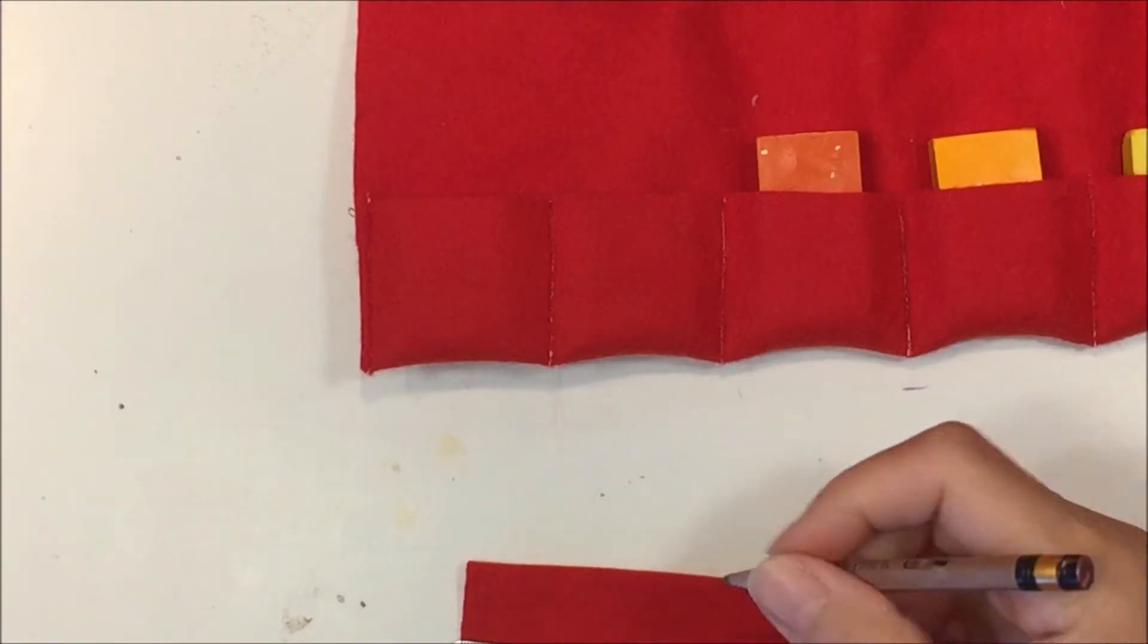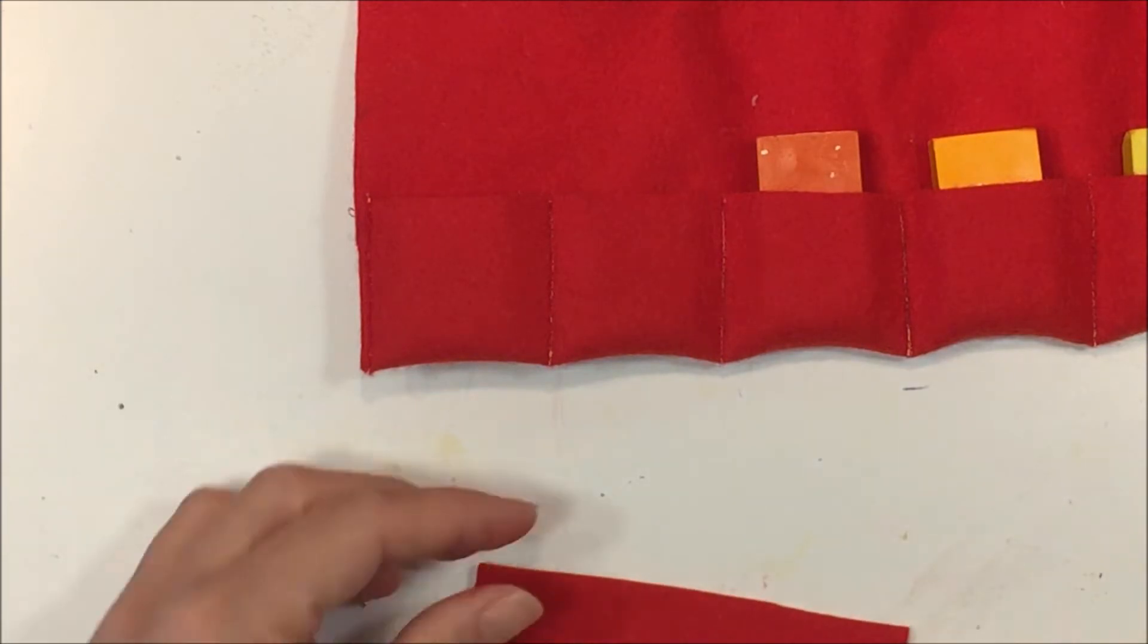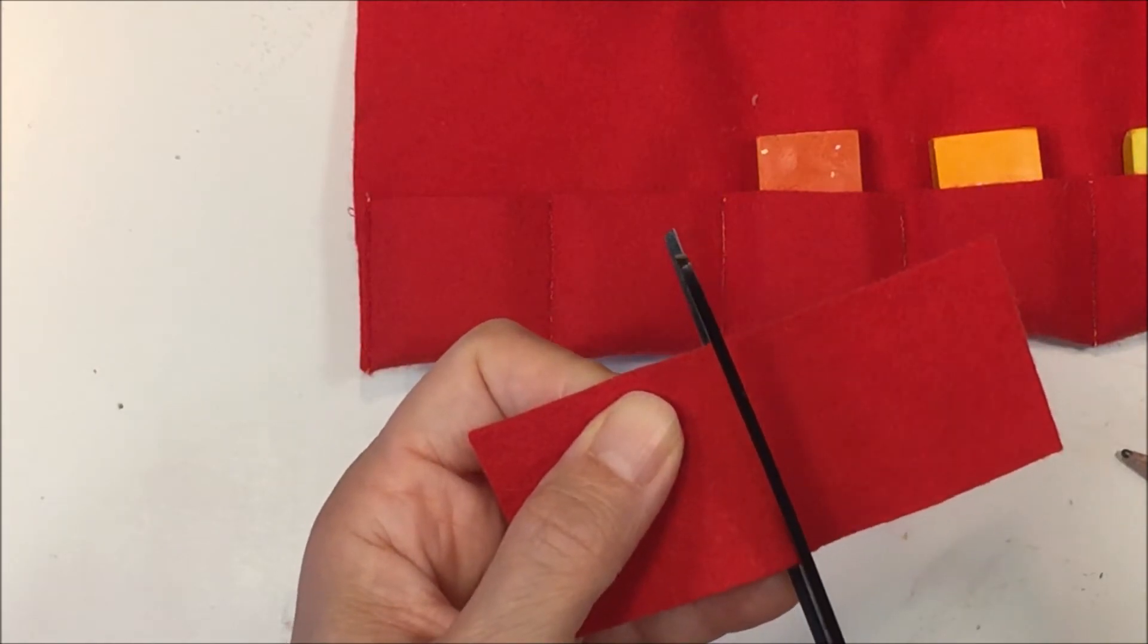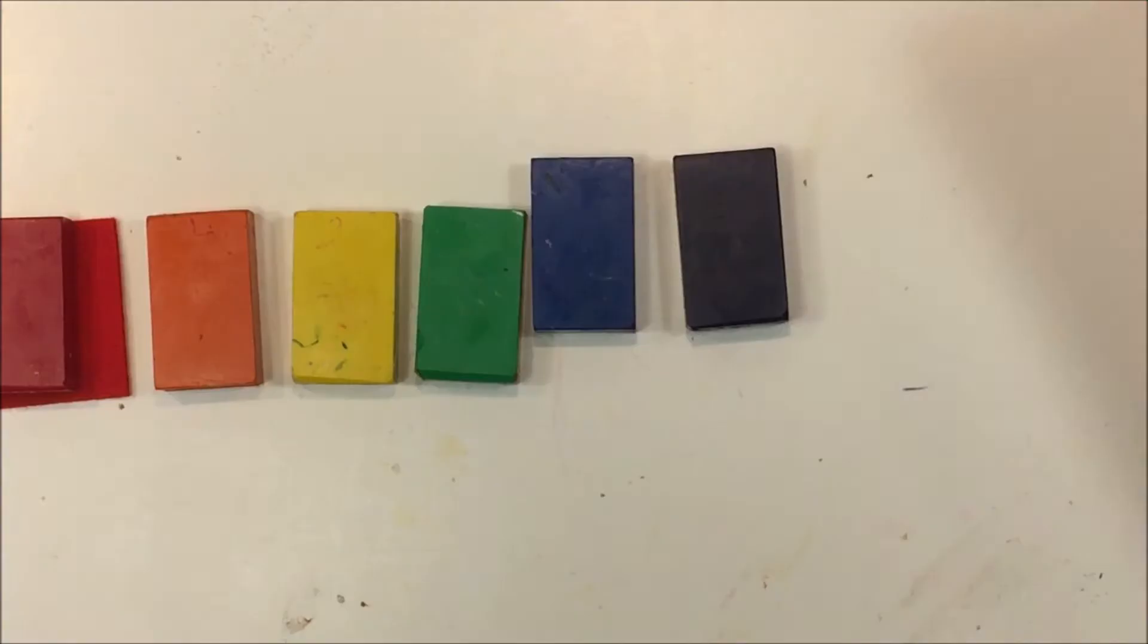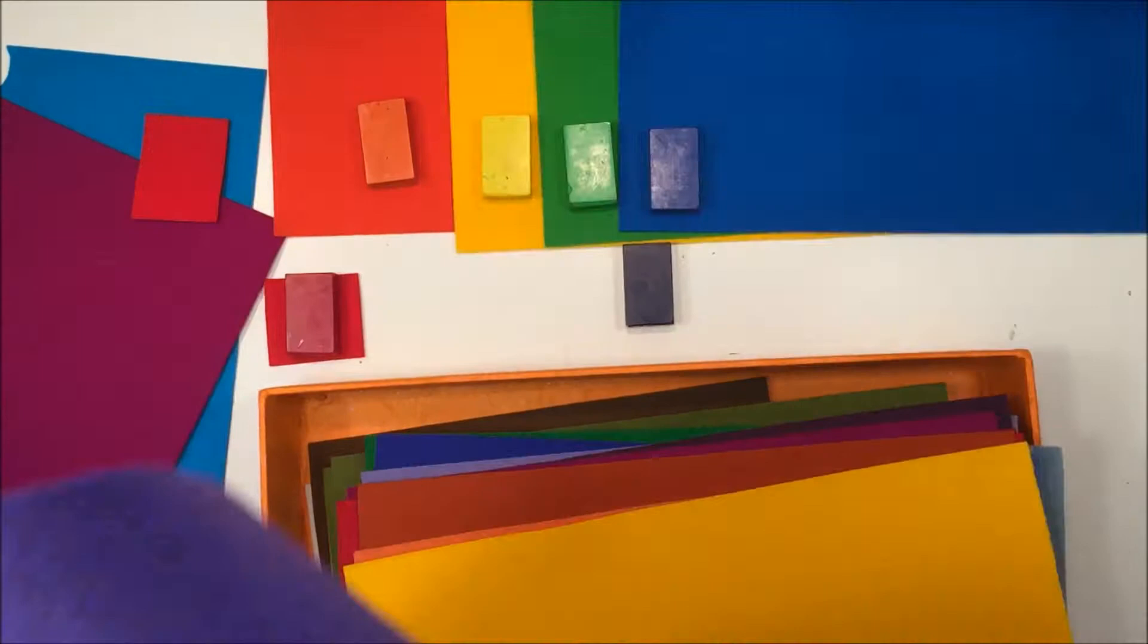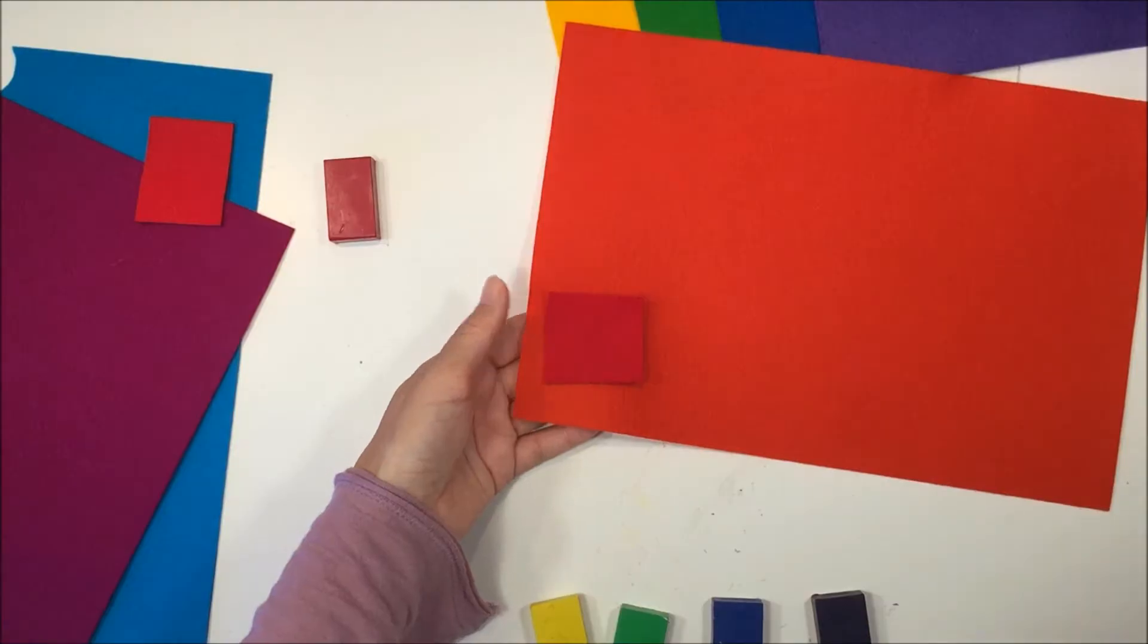I'm using this crayon holder that I made recently as a guide, and I just measured out the pockets so I can cut up a template using this piece of felt and then use that to cut all the pockets out of the different color felts. But first I get to choose the different colors for each of these crayons, and once that's done, then I can go ahead and cut each of those pockets.